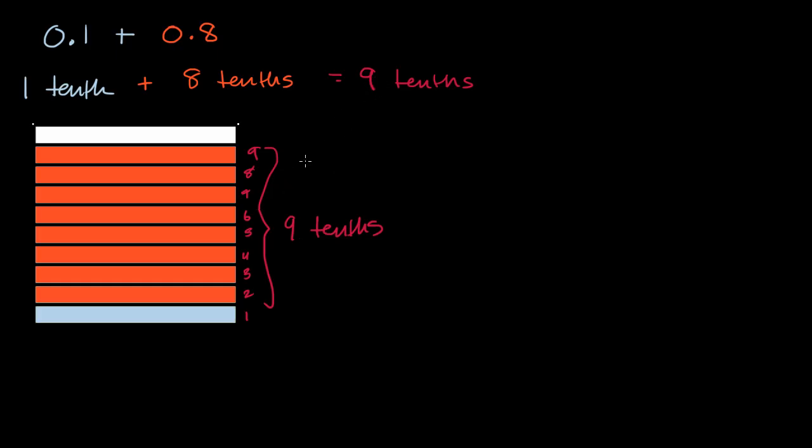Now in either case, how do we write 9 tenths in decimal form? Well, we go to the tenths place, which is one space on the right side of the decimal. And we say, hey, we have 9 tenths. This is the tenths space right over here. So that's just saying we have 9 tenths. We have nine of these tenths right over here. So let's keep building.